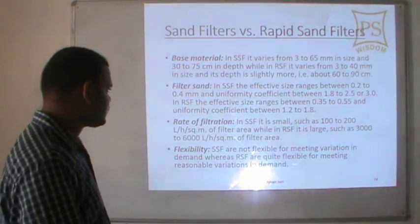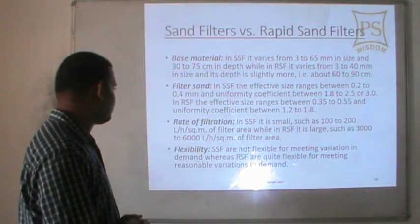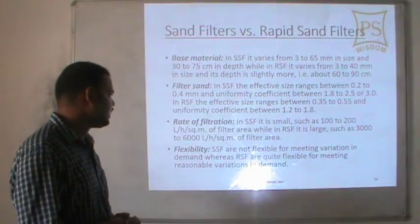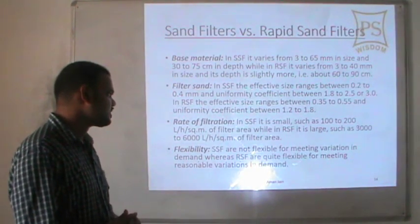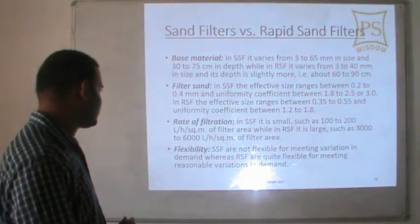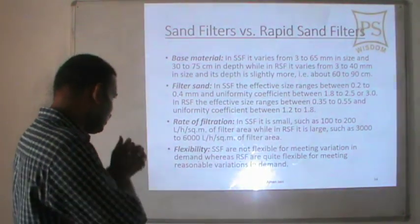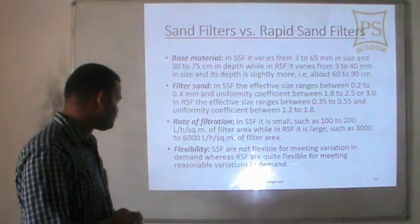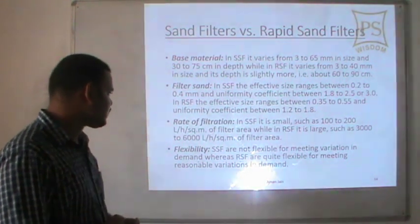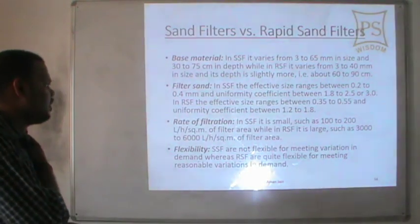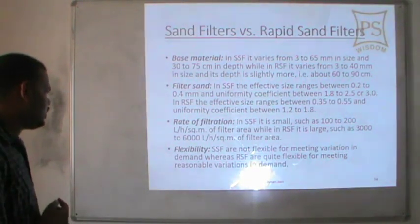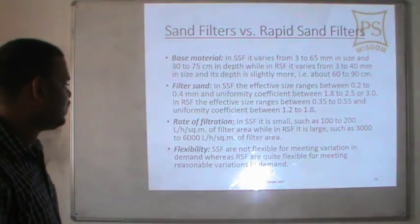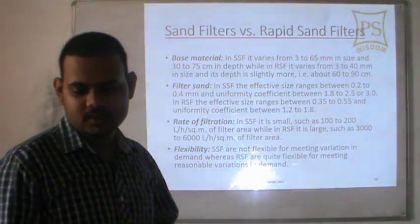Rate of filtration: in SSF it is small — 100 to 200 liters per hour per square meter of filter area; in RSF it is large — 3000 to 6000 liters per hour per square meter. Flexibility: SSF is not flexible for meeting variation in demand, whereas RSF is quite flexible for meeting reasonable variations in demand.